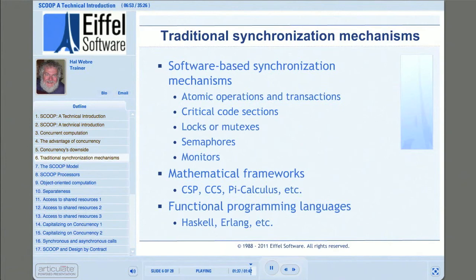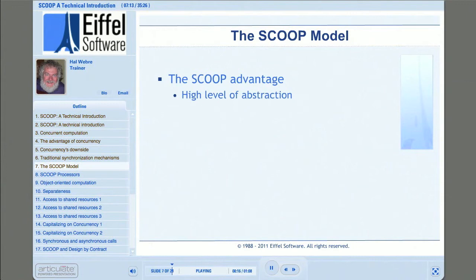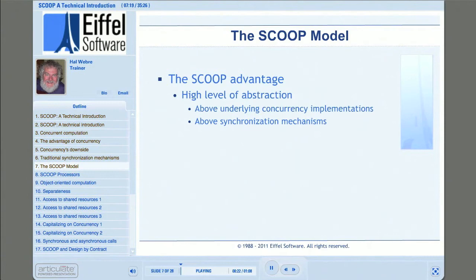Fortunately, life doesn't have to be so difficult. Let's examine the SCOOP model and see what it has to offer. What are the features of SCOOP that distinguish it from other concurrency solutions? First, SCOOP occupies a higher level of abstraction. SCOOP software is therefore independent of the underlying mechanisms for both concurrent execution and synchronization. This means that the same SCOOP software systems targeted to execute in multiple process threads are just as valid targeted to distributed computing.